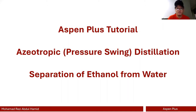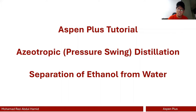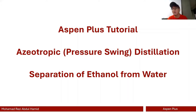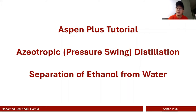Hello everyone, welcome to Aspen Plus tutorial videos. In this week's video I'm going to do a simple demo on azeotropic distillation. There are a lot more methods we can consider when separating azeotropic mixtures, but for this video I'm going to focus on pressure swing distillation. For the binary system, I'm going to focus on the ethanol-water binary mixture. Without further ado, let's begin.